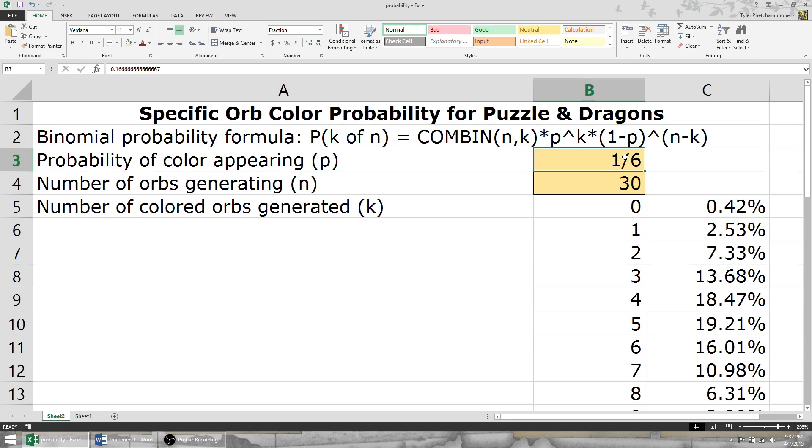We'll want to change this number just in case there's a different dungeon you'd like to do. For example, on the weekend, we don't have the possibility of matching light and dark orbs. They just don't spawn in that dungeon.